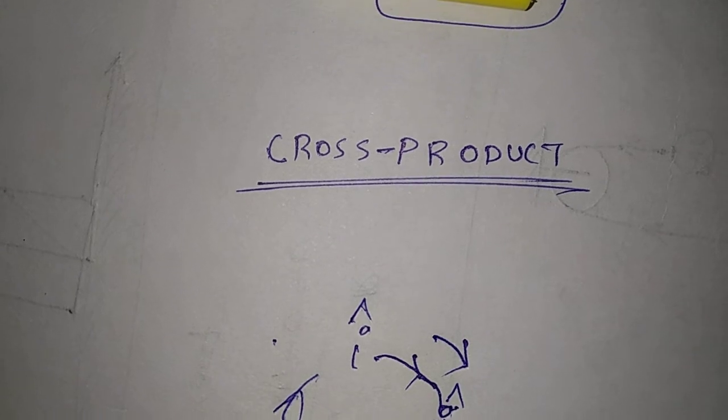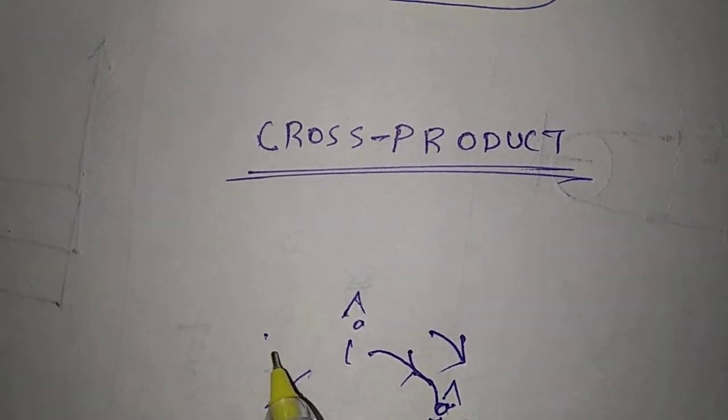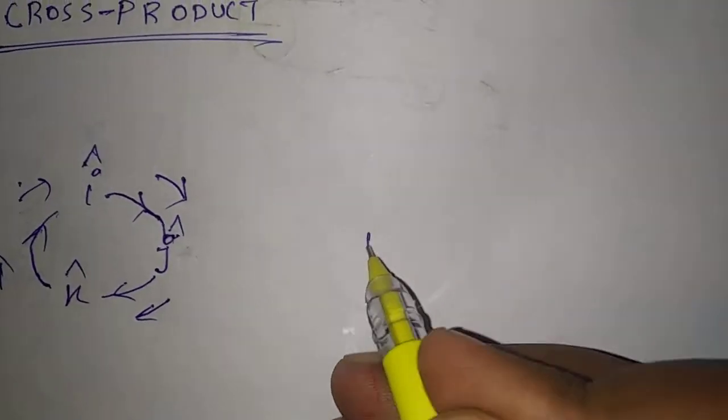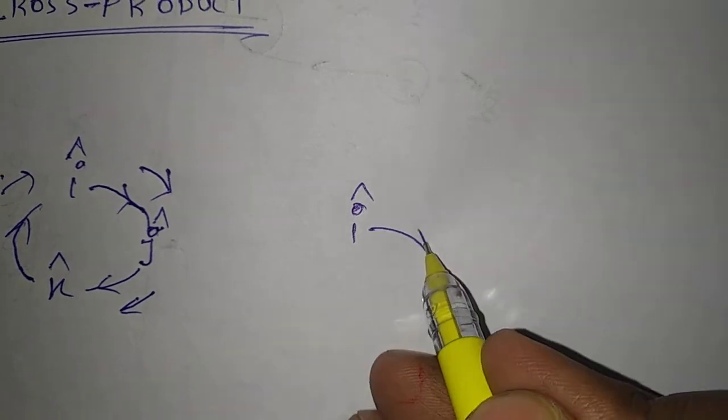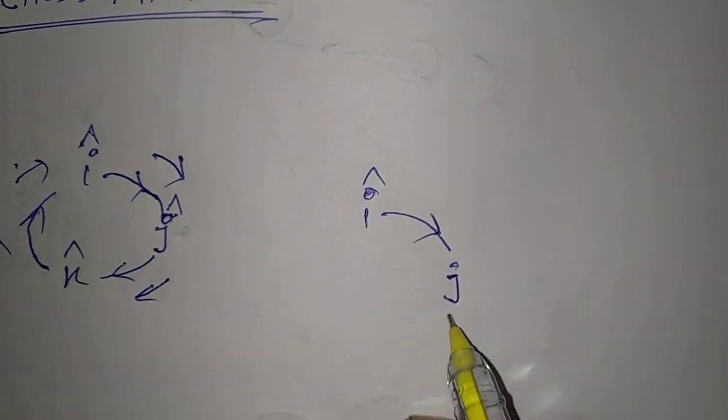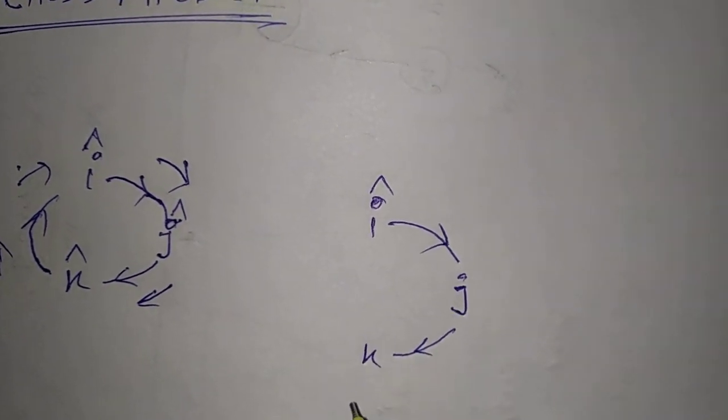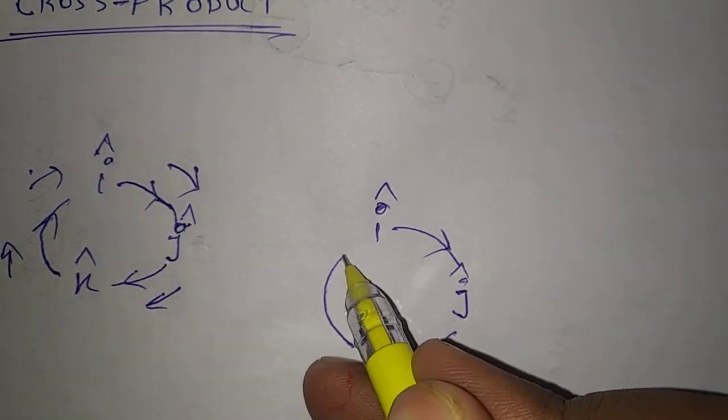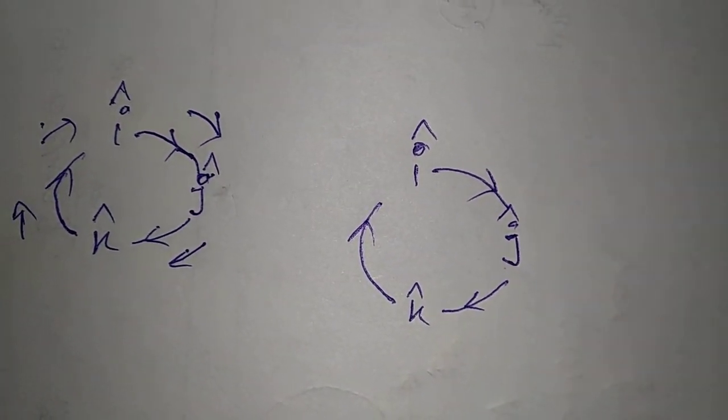I hat, J hat, K hat, and they are rotating in such a way. I'm drawing again: this is I vector, this is rotating and goes to J vector, this is rotating and goes to K vector, and this is rotating and goes to I hat. Sorry, not vector - it's hat, unit vector.